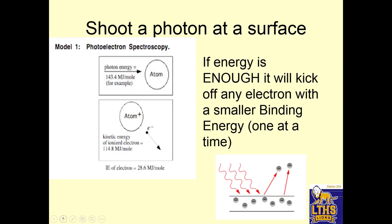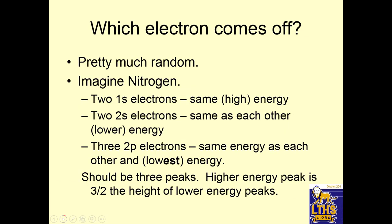Okay, so we're going to do this thing called photoelectron emission spectroscopy. We're going to shoot a photon, which is basically just energy, at a surface. If the energy is enough, it will kick off any electron with a smaller binding energy, one electron at a time. Which electron comes off? It's pretty much random, so any electron. So it's not just the outer electrons, not the inner electrons, it's any of them.